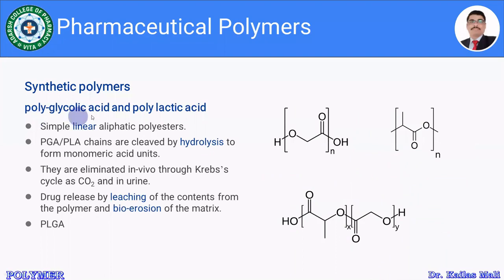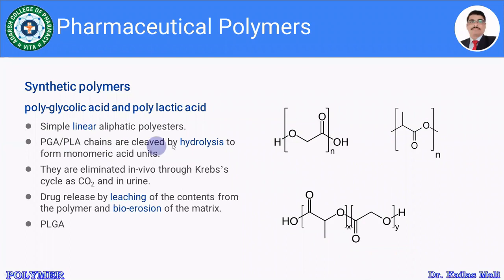First, polyglycolic acid (PGA) and polylactic acid (PLA). The structures shown on the slide represent polyglycolic acid, polylactic acid, and PLGA respectively. These polymers are biodegradable and biocompatible — simple, linear, aliphatic polyesters. PGA or PLA chains are cleaved by hydrolysis to form monomeric acid units. These polymers are eliminated in vivo through the Krebs cycle as CO2 and in the urine.